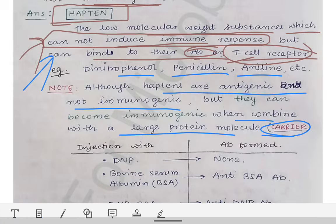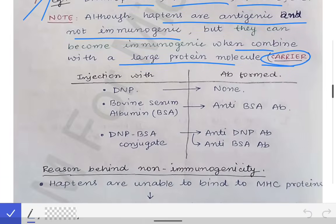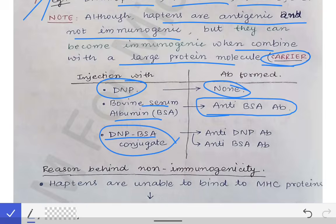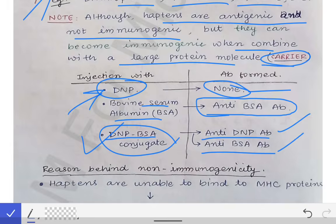This was experimented by Karl Landsteiner. When scientists injected dinitrophenol (DNP) alone, no antibody was produced in the experimental mouse. But when bovine serum albumin (BSA) was injected, anti-BSA antibodies were produced. When DNP was combined with BSA and injected as a conjugate, both anti-DNP antibody and anti-BSA antibody were produced. So earlier when DNP was injected alone no antibodies formed, but with the conjugate both were formed.